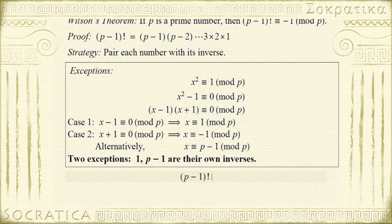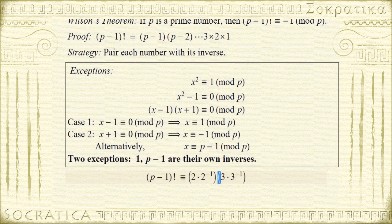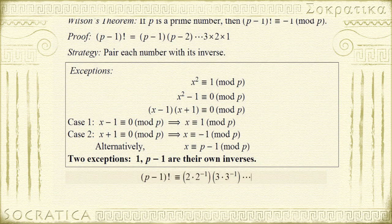So now let's go back to p minus 1 factorial. Let's take and group 2 with its inverse. Let's group 3 with its inverse, and so forth. And we'll be able to do this with every number, the exceptions being 1 and p minus 1.